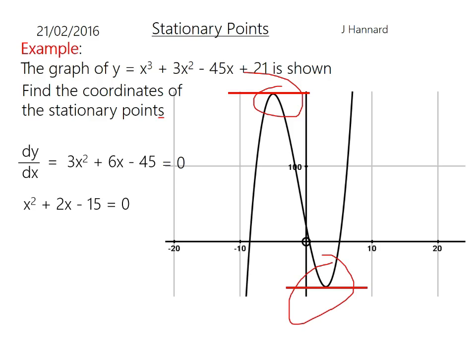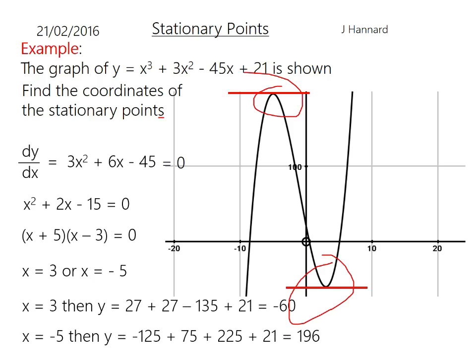Then I'll factorize that whichever way you want to. You can use quadratic formula, completing the square, whatever floats your boat really, however you solve quadratics. But that one does factorize and you're going to get an x coordinate of either 3 or minus 5.